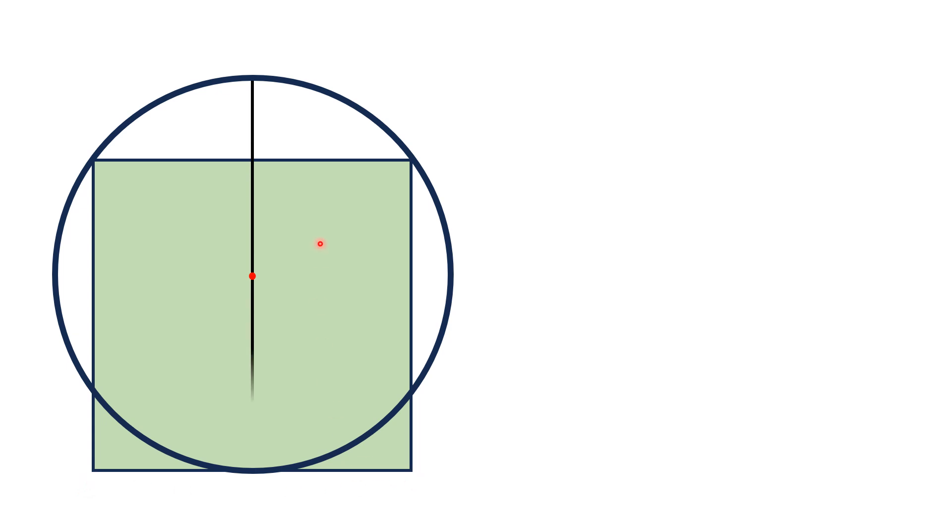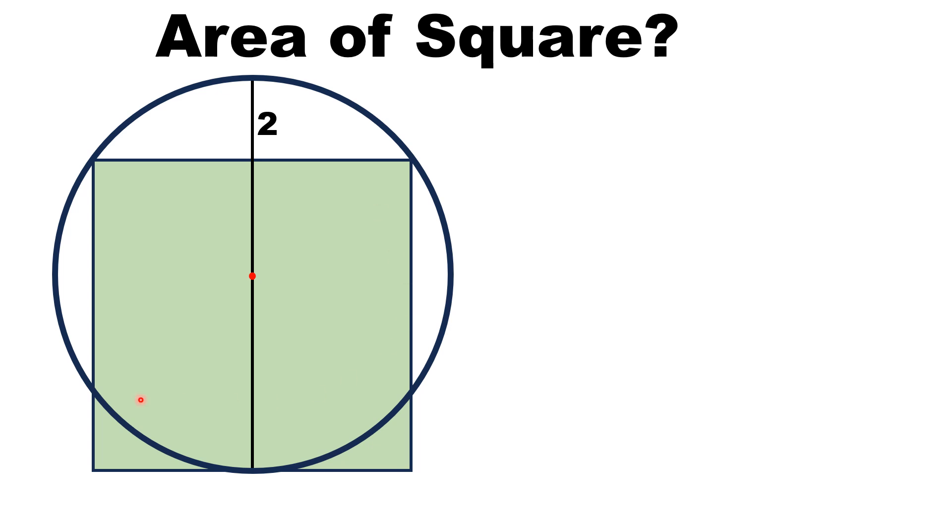If we draw a vertical diameter of the circle, then it divides the square into two equal parts also. If the only given data is that this length is equal to two units, then we have to find the area of this square.